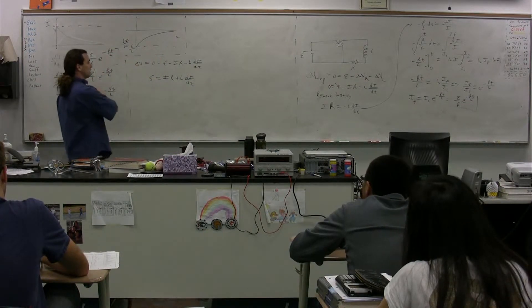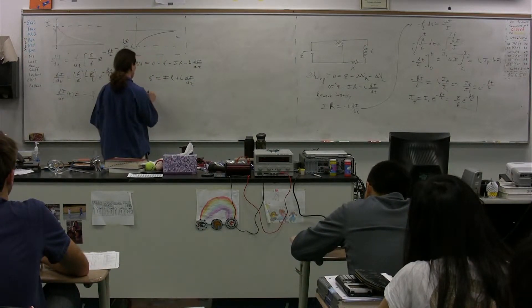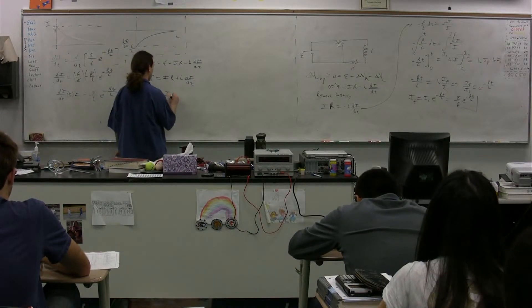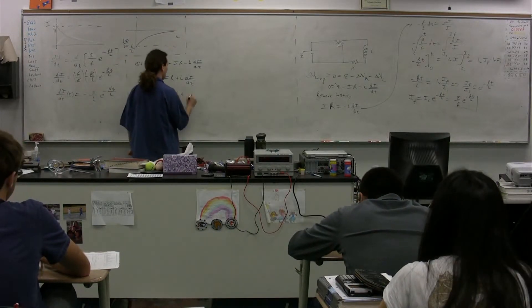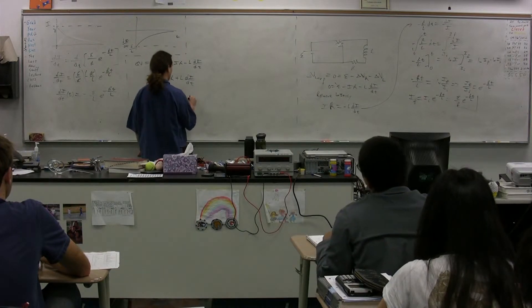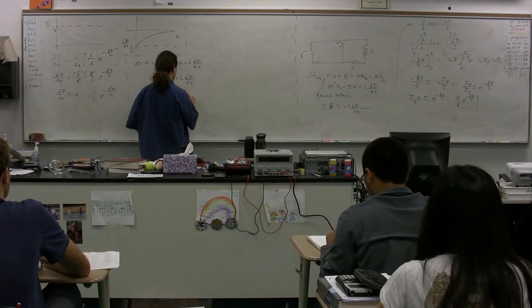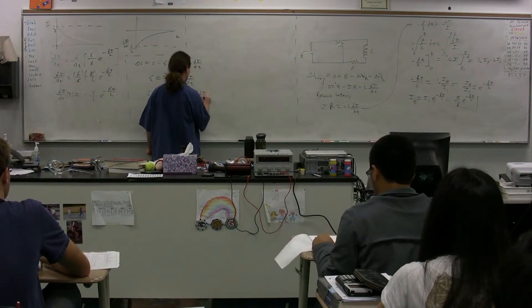If we take and we multiply this whole equation by current, we get current times the emf is equal to the current squared times resistance plus... Bless you. So we have L times i times di/dt.